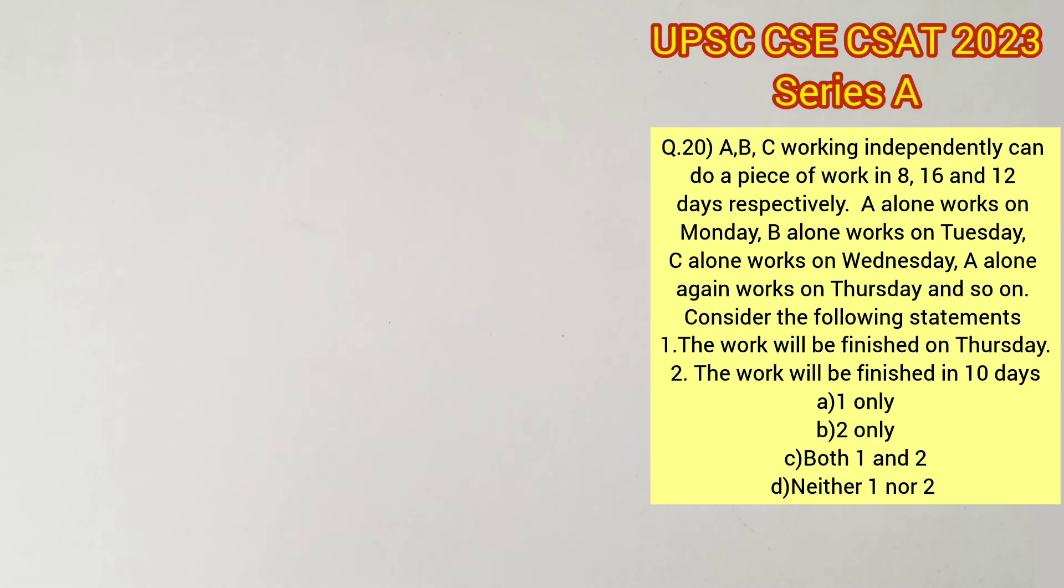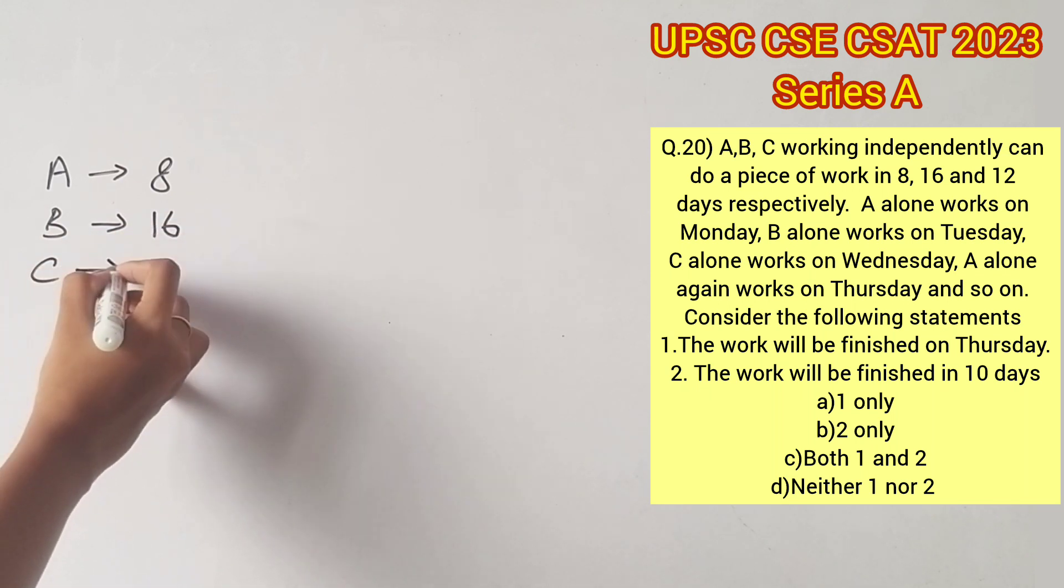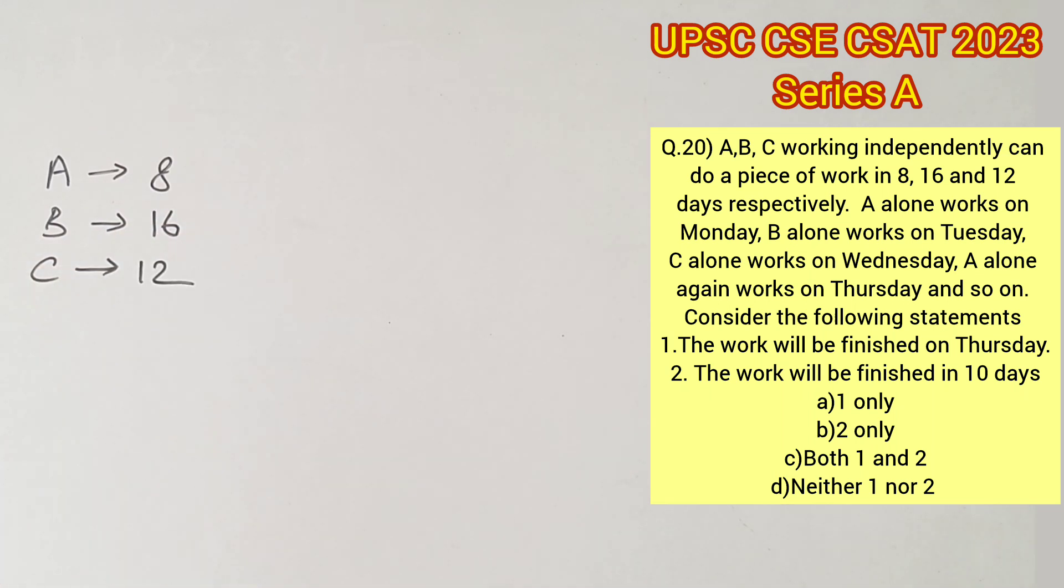Welcome to Aptitude Destination. Please pause the video and read the question completely. Given that A can do a piece of work in 8 days, B in 16 days, and C in 12 days, let's solve this using the units method.